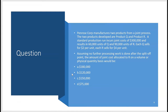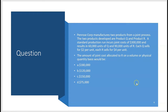Here's a question just like what you could see on the exam. Penrose Corp manufactures two products from a joint process: product Q and product R. A standard production run incurs joint costs of $300,000 — so before we even know what's a Q and what's an R, we've spent $300,000. We need to allocate that $300,000 to Q and R based on volume. The joint cost resulted in 60,000 units of Q and 90,000 units of R, for a total of 150,000 units.